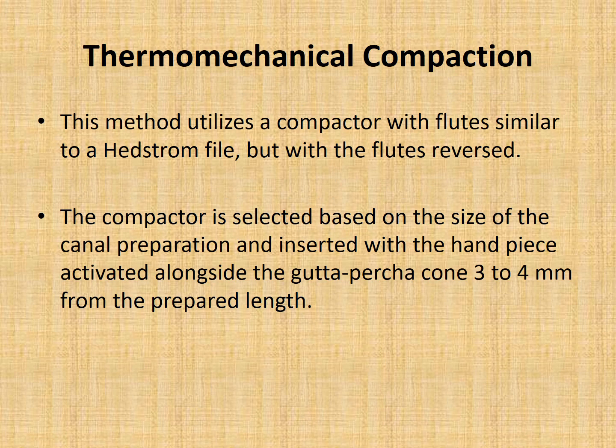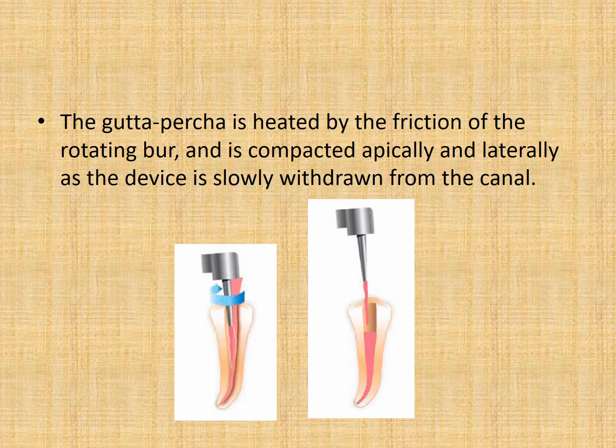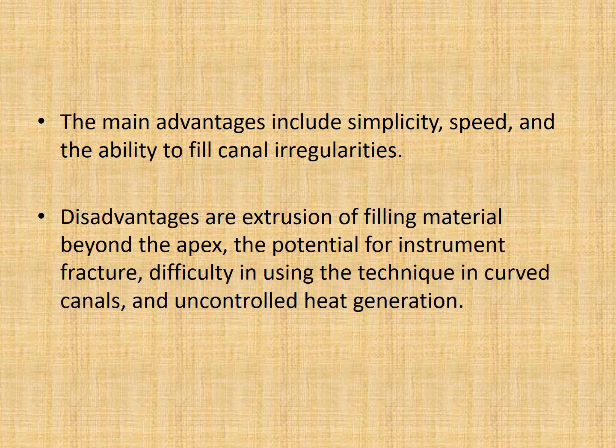Moving to thermomechanical compaction: here the mechanical movement of the file generates heat which helps in compaction of gutta percha. There is utilization of a compactor with flutes similar to a Hedström file but with the flutes reversed. The compactor is selected based on the size of canal preparation and inserted with a handpiece alongside the gutta percha cone 3-4 mm from the prepared length. The gutta percha is heated by friction of the rotating bur and compacted apically and laterally as the device is slowly withdrawn. Advantages are simplicity, speed and ability to fill canal irregularities. Disadvantages include extrusion of filling material beyond the apex, potential for instrument fracture, difficulty in curved canals, and uncontrolled heat generation.